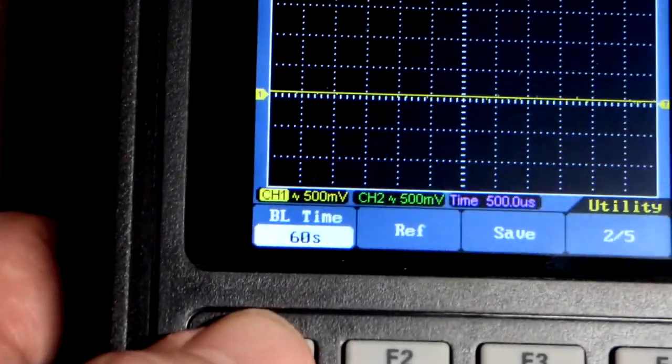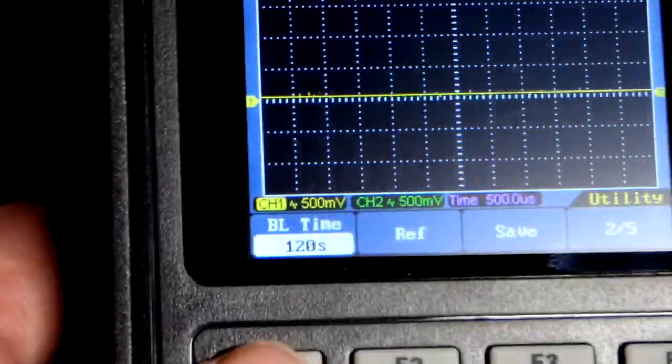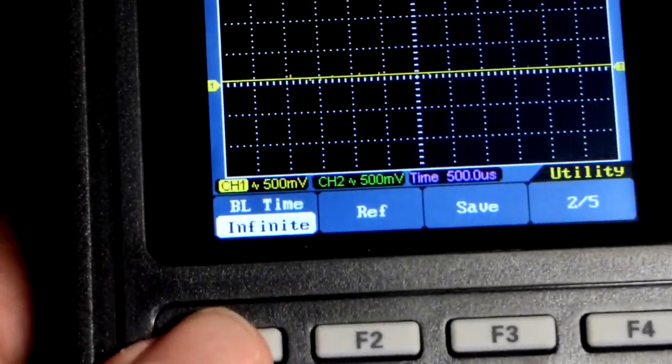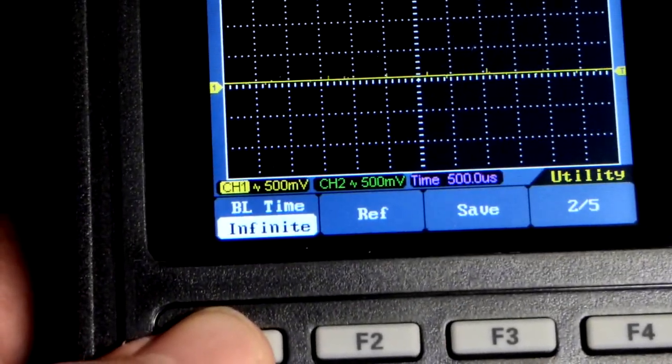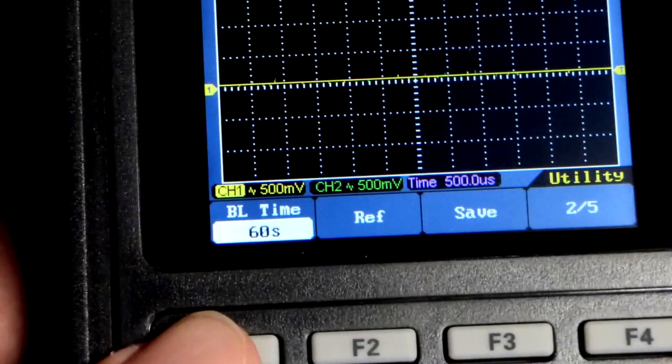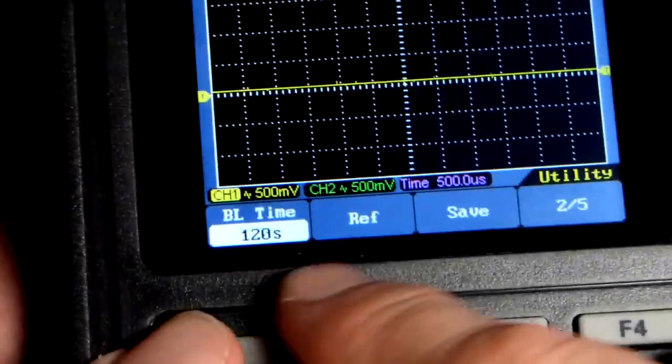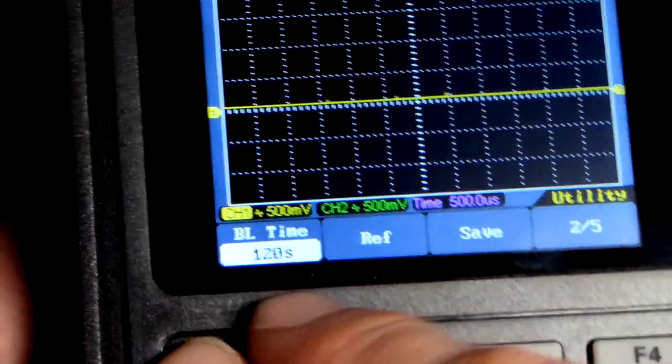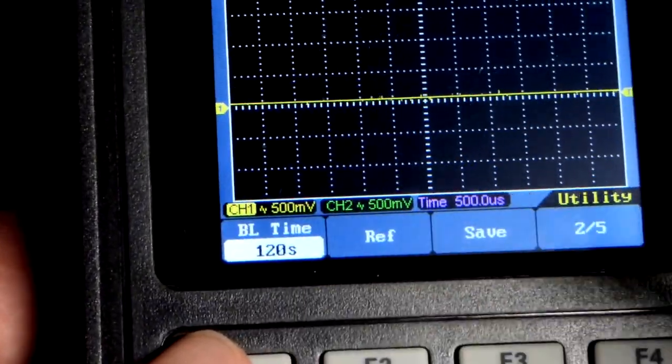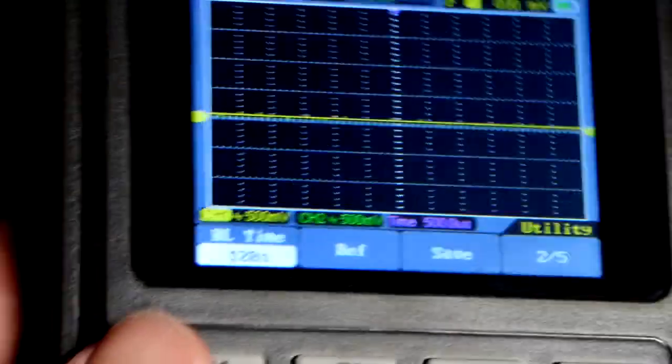We want to change from 30 seconds. I'm going to do 120, so you could see there's also infinite where it doesn't turn off at all. There's five settings: 30 seconds, 60 seconds, 90 and 120. I'm going to keep it at 120 both to save battery and also as a reminder that the backlight will go off every once in a while.